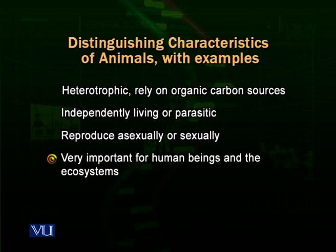Animals are very important for human beings and for the ecosystems because they make a very important part of food webs and food chains. For example, if the herbivore animals are not present in an environment, then the plants may grow to a very high extent and this imbalance may harm the ecosystem. If the carnivores are not present, then herbivores may increase to the extent that they eat all the grass and plants and ultimately they will also die. So they make a natural check and balance mechanism inside the environment.